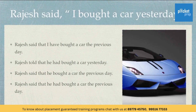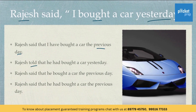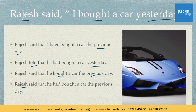Next one: Rajesh said, 'I bought a car yesterday.' Here are the options: A) Rajesh said that I have bought a car the previous day. B) Rajesh told that he had bought a car yesterday. C) Rajesh said that he bought a car the previous day. D) Rajesh said that he had bought a car the previous day.